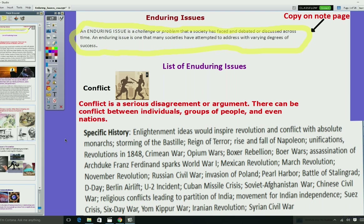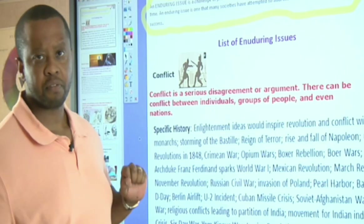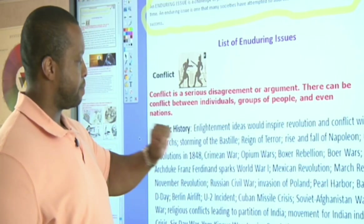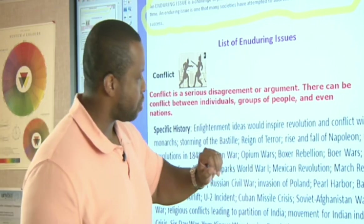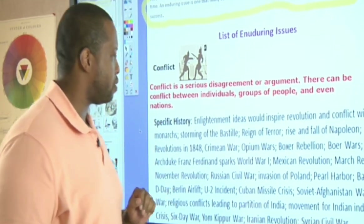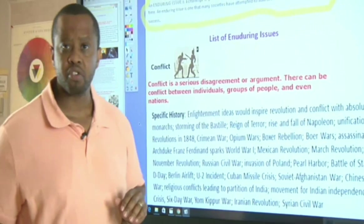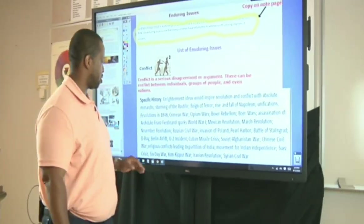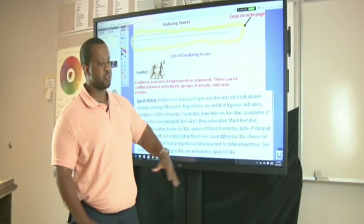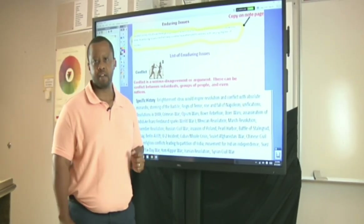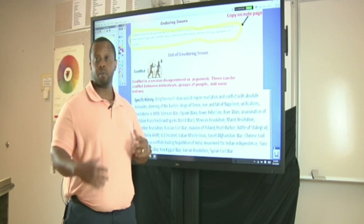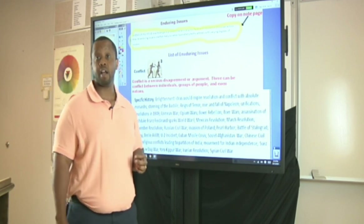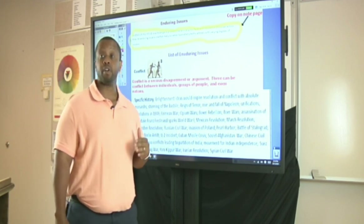Moving forward, we have many other revolutions, such as the revolutions of 1848 during the time of nationalism. We have the Crimean War, the Opium Wars, the Boxer Rebellion, the Boer Wars, and the assassination of Archduke Franz Ferdinand, which we all know began World War I. There are many, many different kinds of conflicts that we could see within the idea of conflict as an enduring issue.